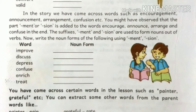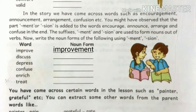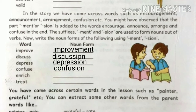Now, write the noun forms of the following using -ment and -tion. Let us see these verb forms and make them noun forms: improve → improvement, discuss → discussion, depress → depression, confuse → confusion, enrich → enrichment, treat → treatment.